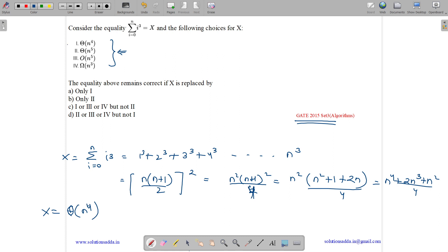Now let us see. Theta of n⁴, it is correct. Theta of n⁵, it is false. Order of n⁵ means less than equal to n⁵, so n⁴ is less than equal to n⁵, so it is correct.